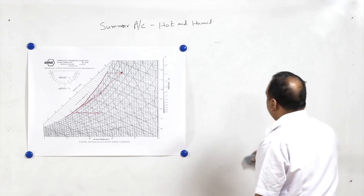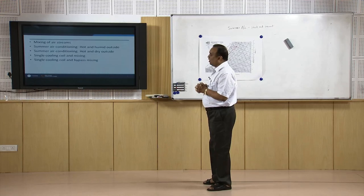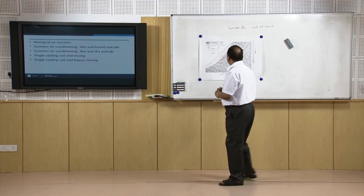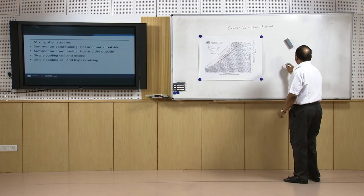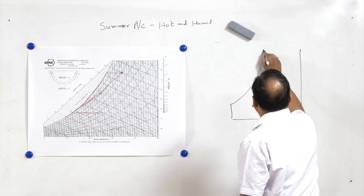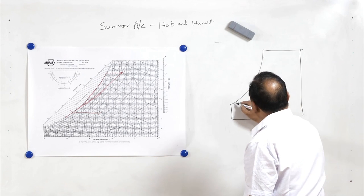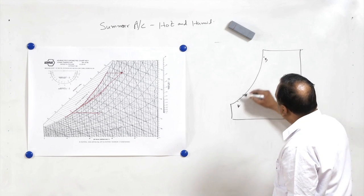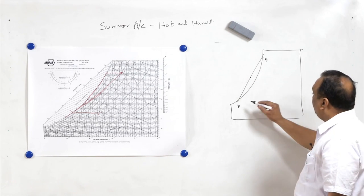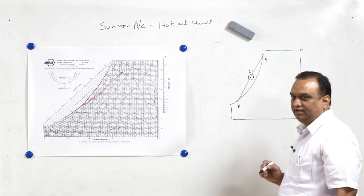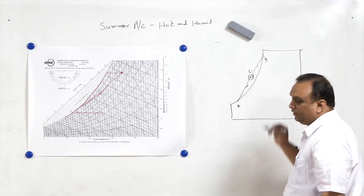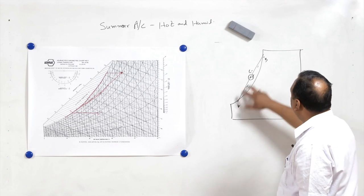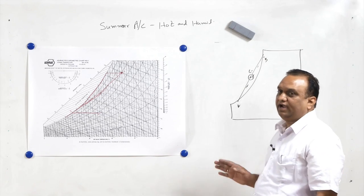Another type of climate is hot and dry outside. Before discussing hot and dry weather, we should understand what happens when two streams are mixed. Suppose one stream is very hot and humid air and another is very cold and humid air. If these two streams A and B are mixed in a 50-50 ratio, the resulting state C may be such that a fog is formed — the air becomes foggy. Such a situation can arise when highly humid cold air and highly humid hot air are mixed, and we can get a fog state as well.